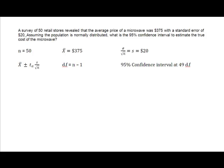All right, I'm going to work this problem on this chapter quiz that has given everybody such fits. What we have is a survey of 50 retail stores, and that survey revealed that the average price of a microwave was $375, with a standard error of $20. I'm going to assume normal distribution. I want to know a 95% confidence interval to estimate the true cost of a microwave.